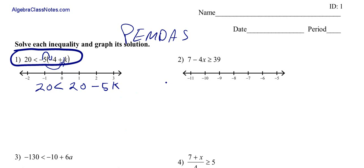Now we're just going to isolate the variable, doing our inverse operations to get k all by itself. The first thing I want to do is subtract 20 from both sides. 20 minus 20 is 0, so I'm just left with negative 5k. On the other side, 20 minus 20 is 0, so 0 is less than negative 5k.